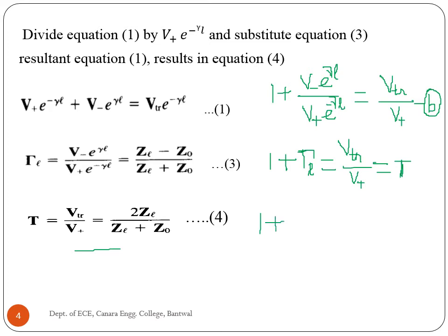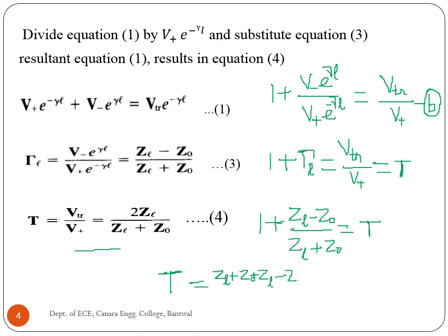Substituting the reflection coefficient equation, we get the transmission coefficient equation. T equals the transmission coefficient, which simplifies to: T equals Z_L plus Z0 plus Z_L minus Z0 divided by Z_L plus Z0. The remaining terms give T equals 2Z_L divided by Z_L plus Z0. This is equation 4, the transmission coefficient.